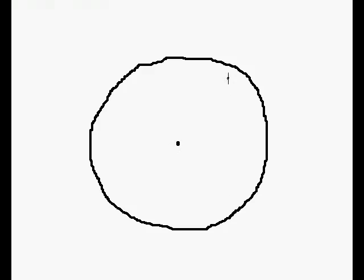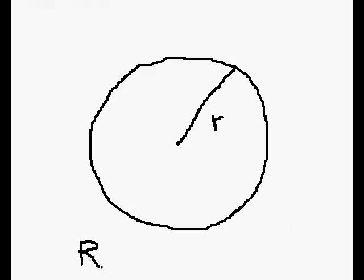Now we draw a line from the middle point to the edge of the circle. This is R. R means radius of the circle.